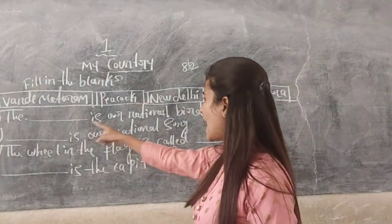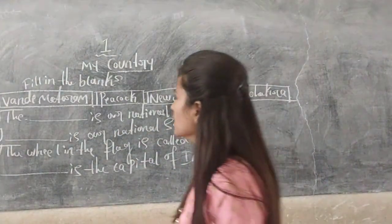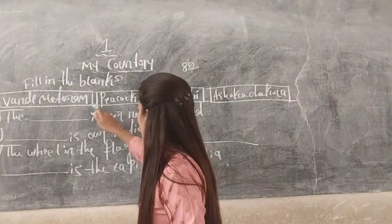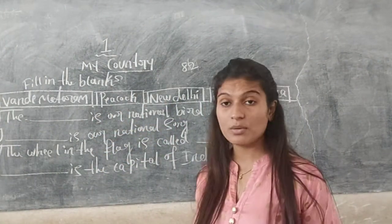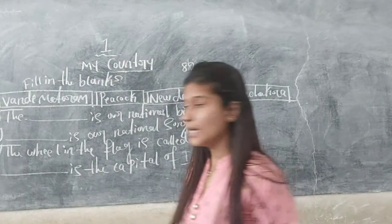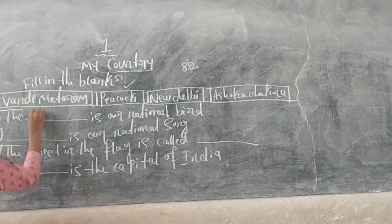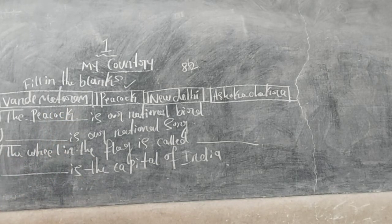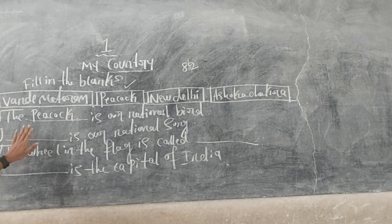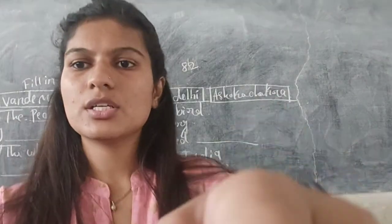First one: the dash is our national bird. The choices are Vande Mataram, Peacock, New Delhi, or Ashoka Chakra — which is our national bird? It is nothing but the peacock. Peacock is our national bird. Next one: the dash is our national song — which one is our national song?